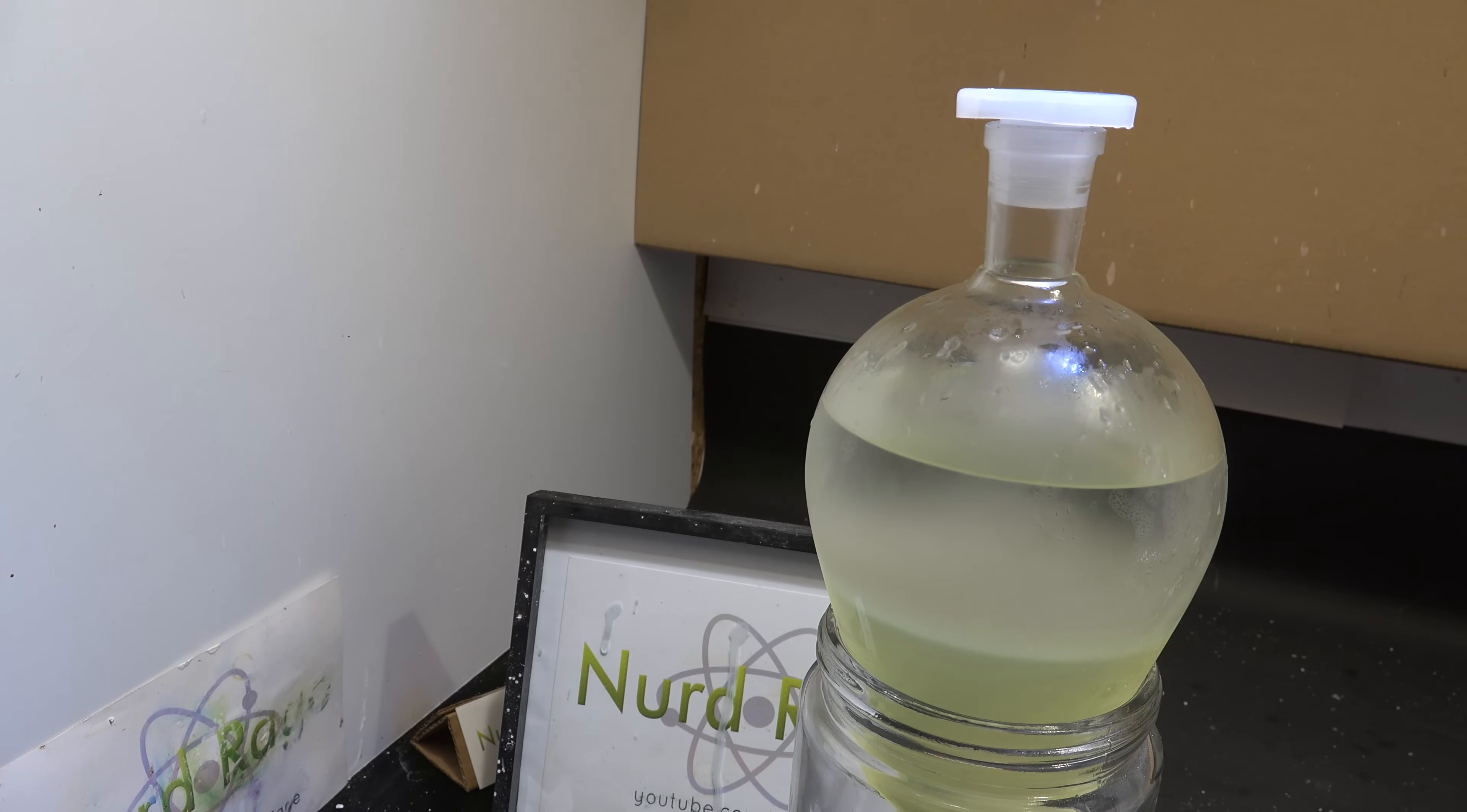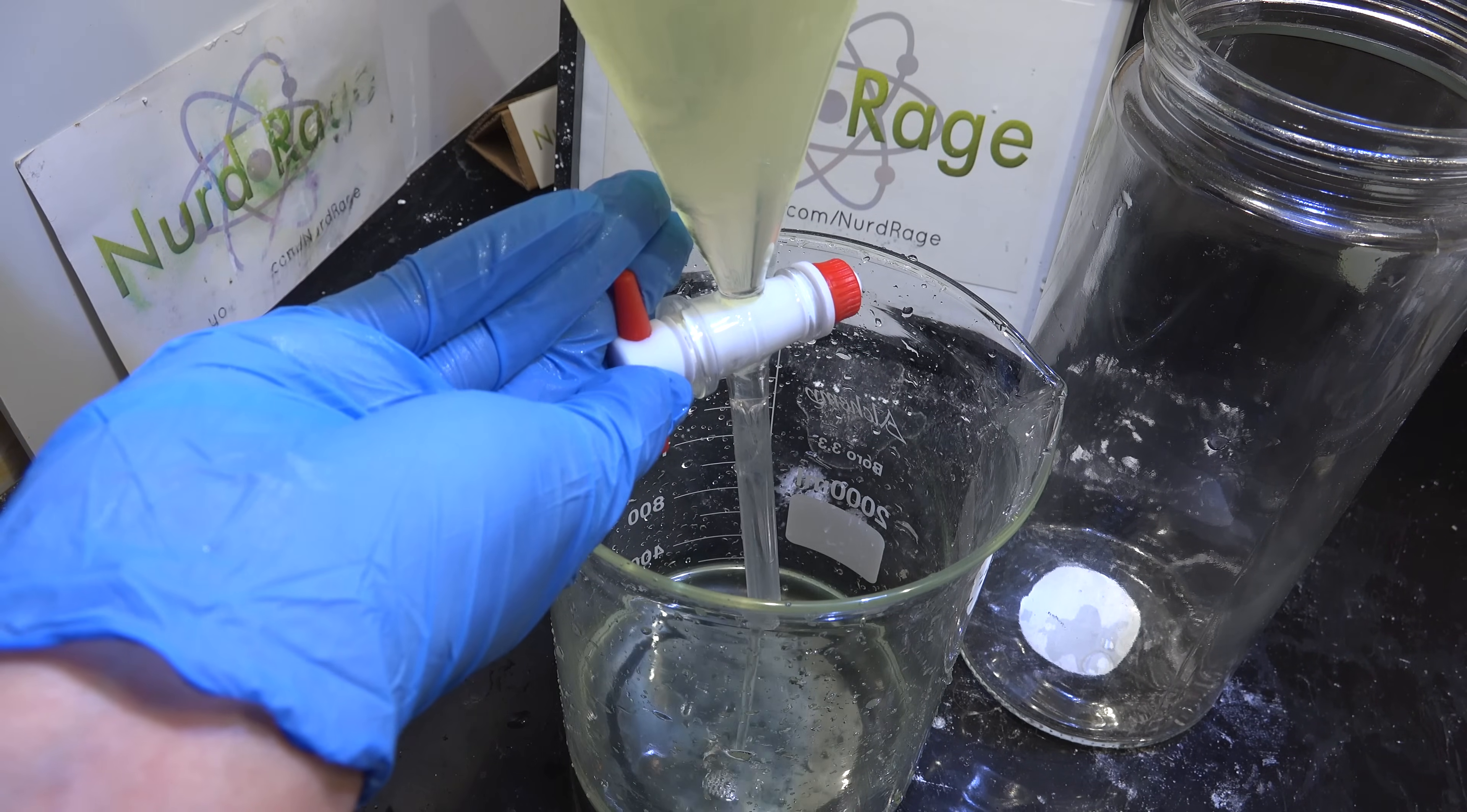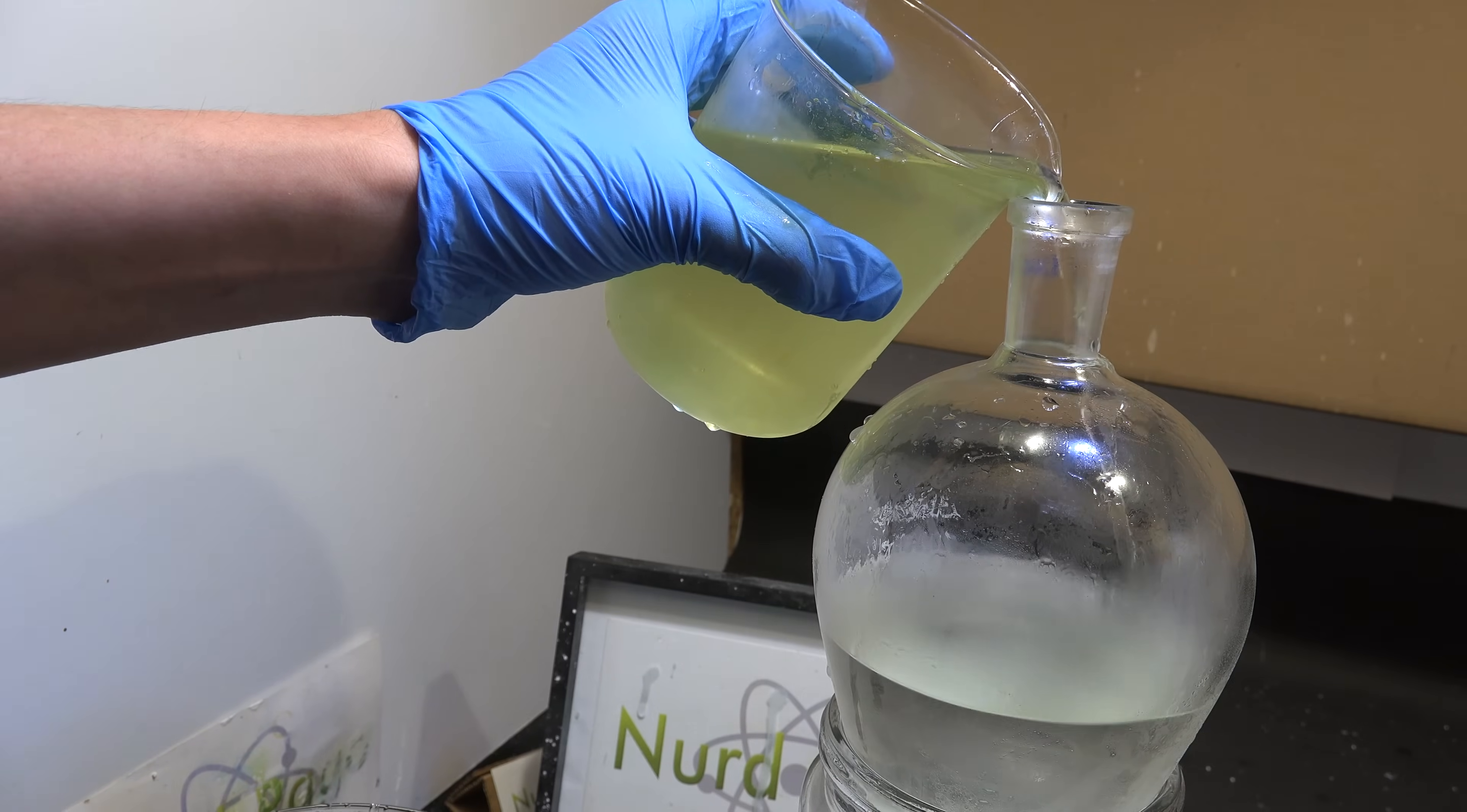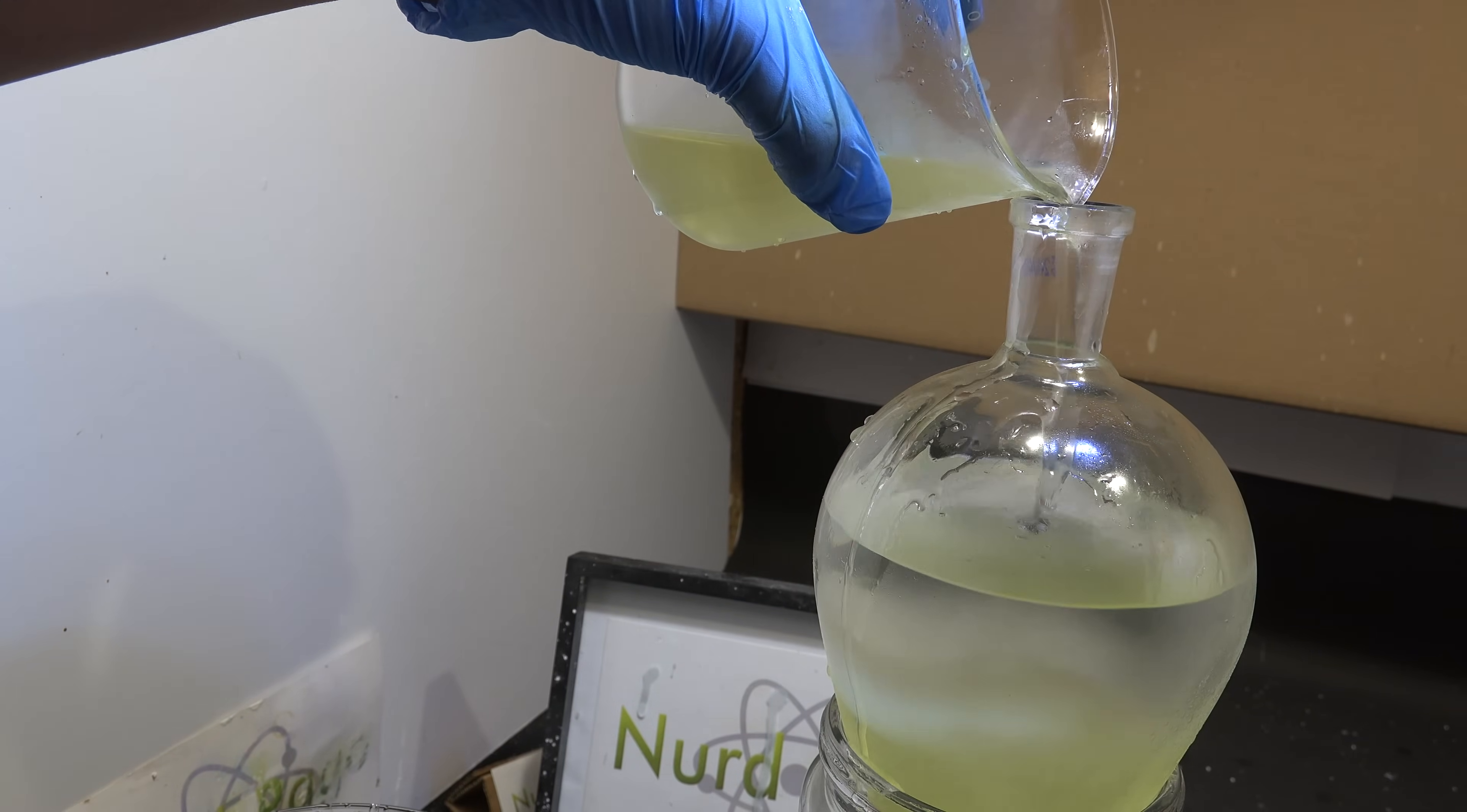After a few minutes of shaking, let the contents settle and drain out the bottom aqueous layer. This should be depleted in gallium chloride. Keep the upper organic layer of ether. Now I have a lot more solution so now I'm going to add another 500mL of it to the ether and extract more gallium chloride.